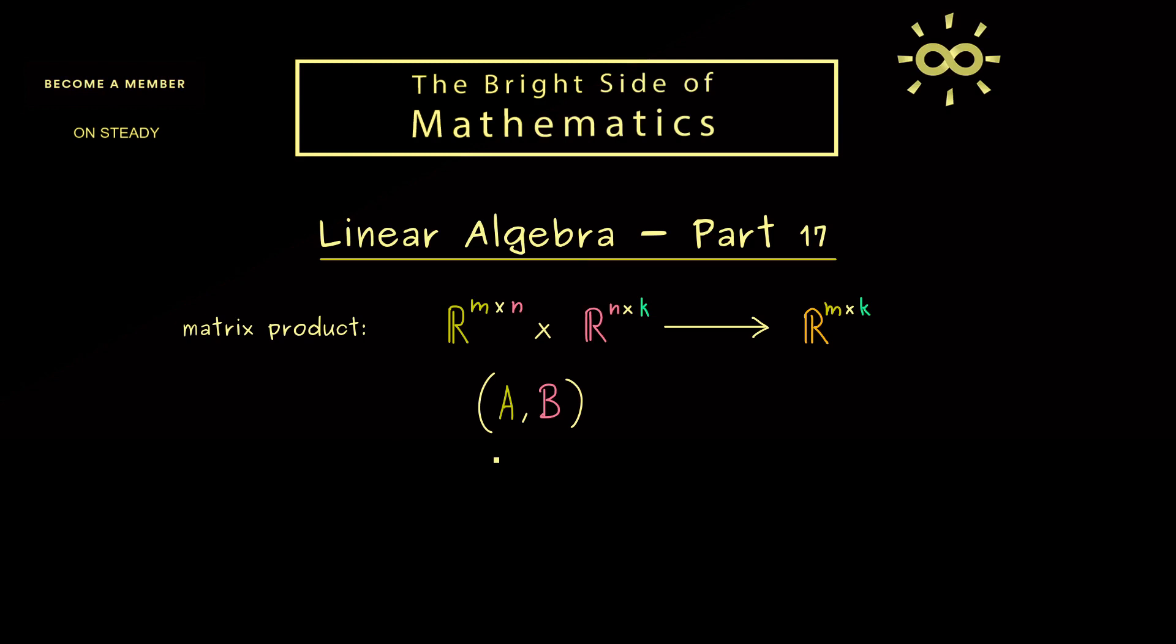And now for the input you know it's required that the number of columns of A coincides with the number of rows of B. Moreover, you also know that for the resulting matrix we omit the dot and just write AB. Now in the last video we have seen that we have different possibilities which are all equivalent to define this matrix product.